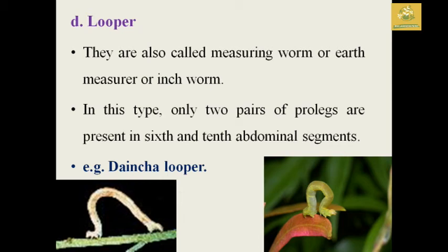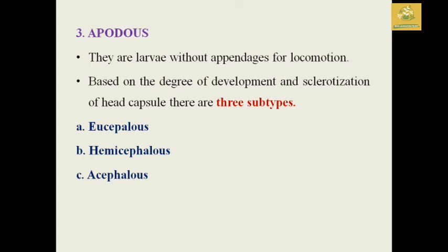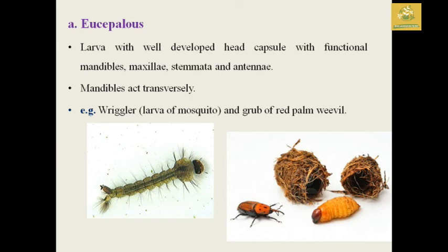Loopers are also known as measuring worms, earth worms, or inchworms. They have two pairs of prolegs present on the sixth and tenth abdominal segments — for example, the teak defoliator looper. Apod larvae have no appendages and use loops for locomotion. Based on the degree of development and sclerotization of the head capsule, there are three subtypes: eucephalous, hemicephalous, and acephalous.